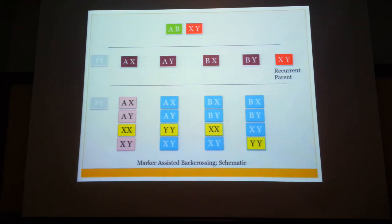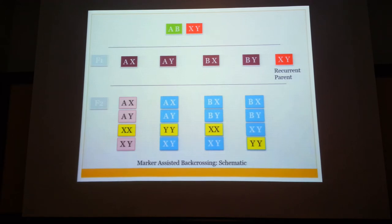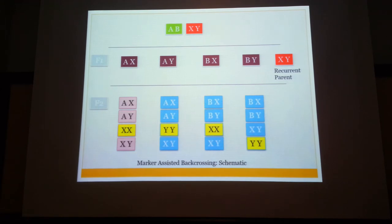In marker-assisted backcrossing, you have the same scheme with AB and XY. You cross AB, the elite variety, with XY, the wild type, to obtain the F1 hybrid combination of AX, AY, BX, and BY. In order to dilute the influence of XY, the wild variety, you backcross. In F2 you again get a combination of variants which inherit genes in the Mendelian manner; however, the percentage of genes from the wild variety will reduce over subsequent generations.